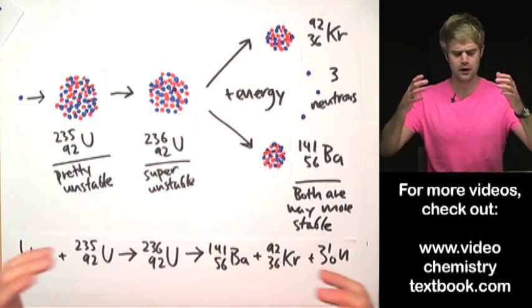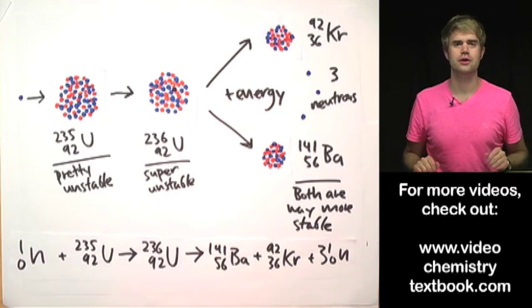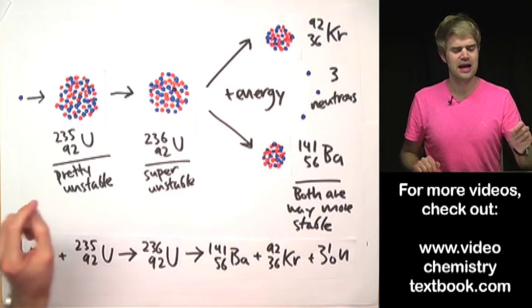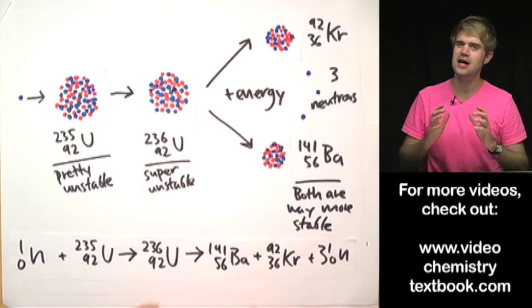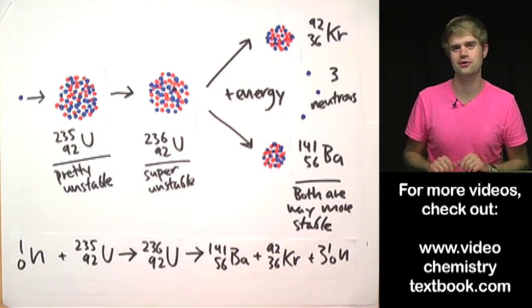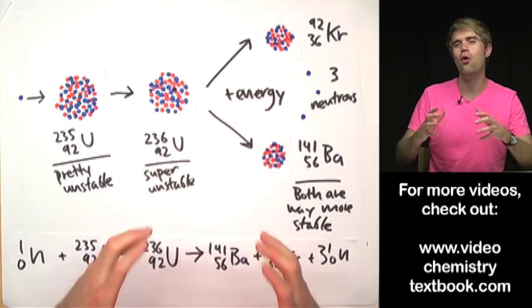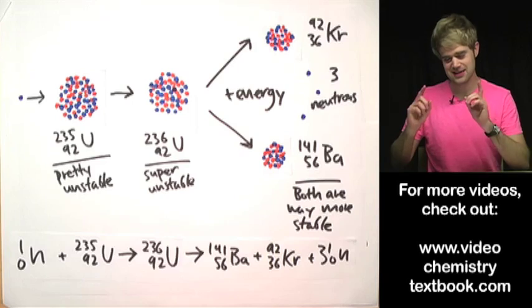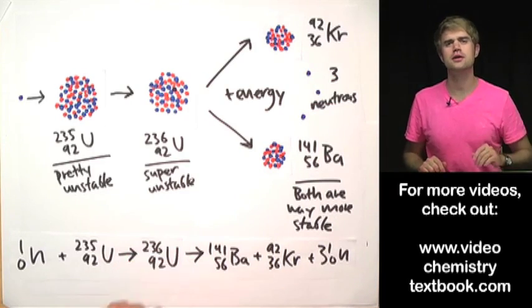A lot of times we can use nuclear fission to produce energy, but if all we're doing is splitting just one uranium atom, it's not going to produce a whole lot of energy. If we want to make a whole bunch of energy, this is where these three neutrons are going to come in. Check this out.